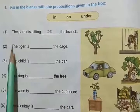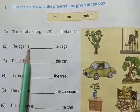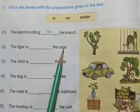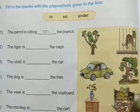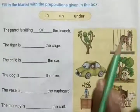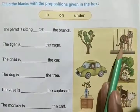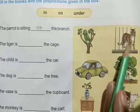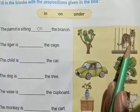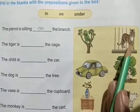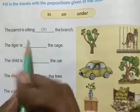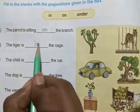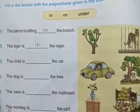Second one: The tiger is dash the cage. The tiger is — in, on, or under? Yes, very good — in. I-N, 'in' the cage.